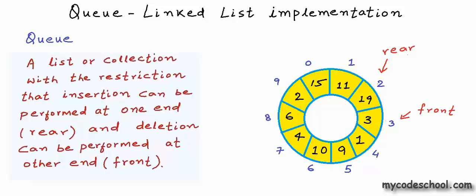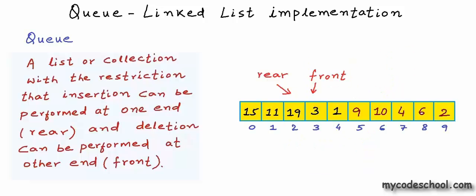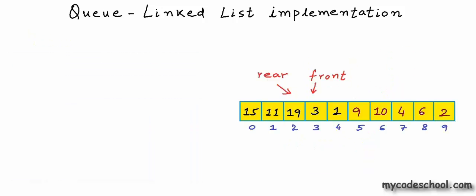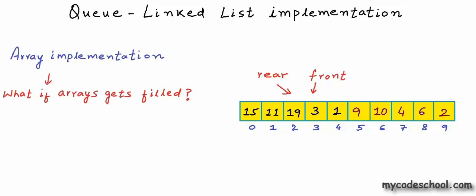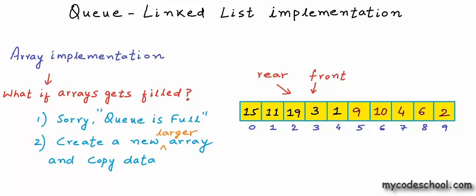Note that the circular array representation is only a logical way of looking at an array — we can also show this array linearly. As I was saying, in an array implementation we have the question of what if the array gets filled, and we need to take care of this. We can either say the queue is full or create a new larger array and copy elements from the previous filled array.